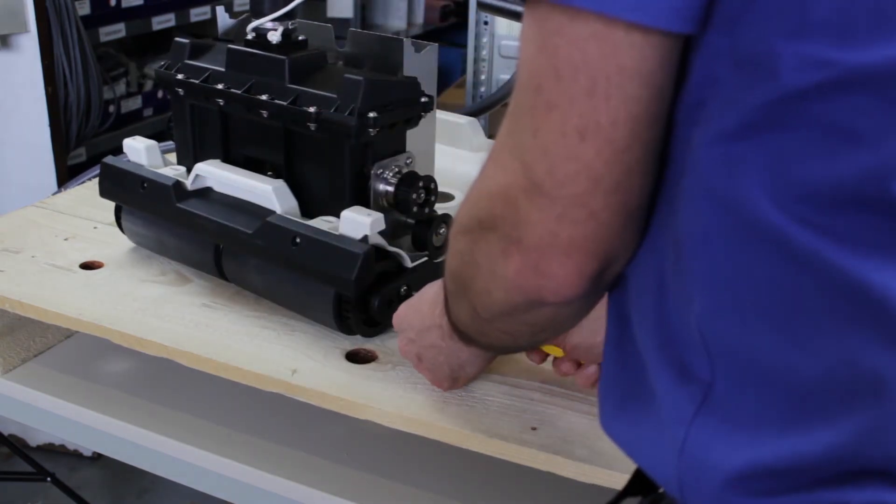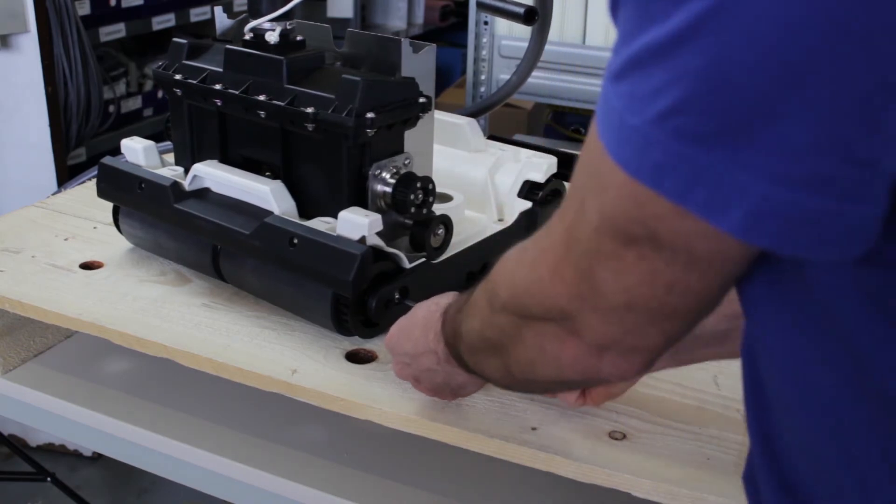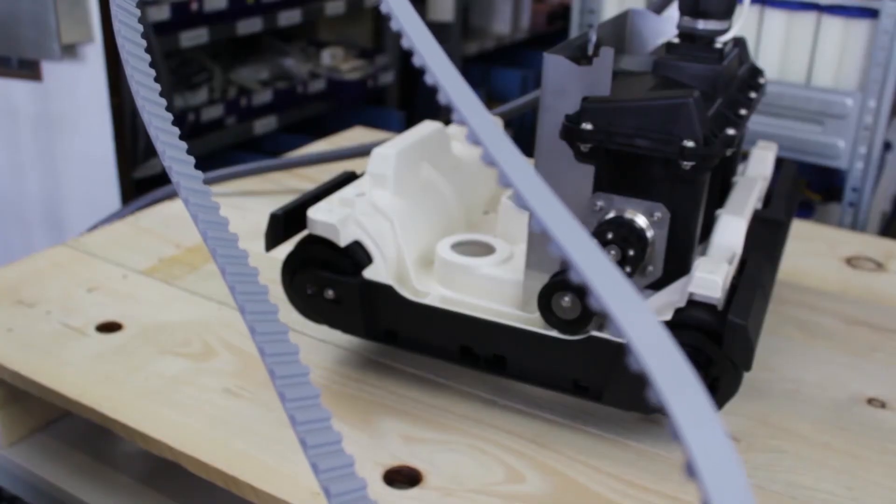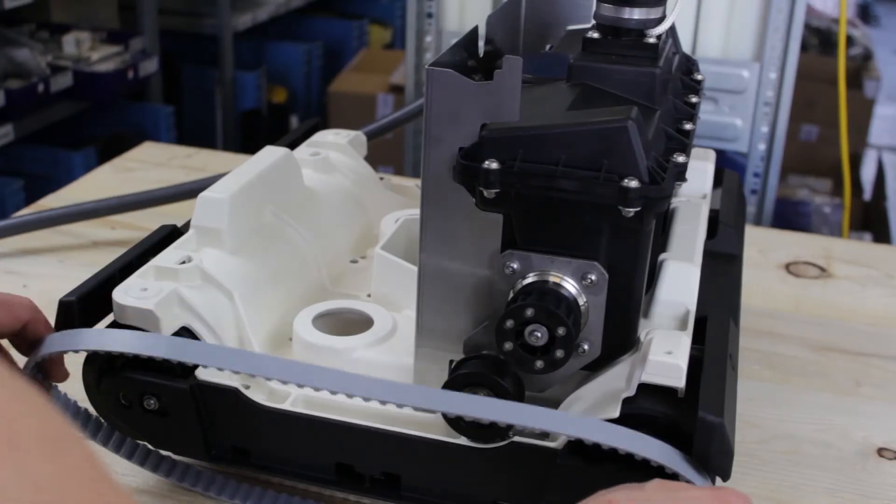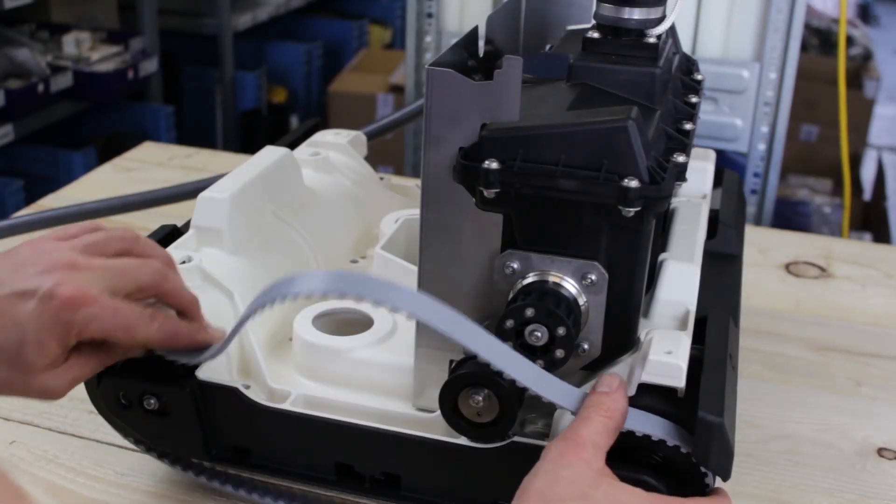Now the loosened drive belts must also be reattached. The clamping device is still flexible because we loosened the screw beforehand.